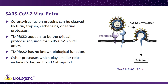Once the virus attaches to the host cell through the spike protein–ACE2 interaction, and the spike protein is cleaved via TMPRSS2 enzymatic activity, the innate surveillance mechanisms start to be activated. Some groups have suggested inhibiting the function of TMPRSS2 to minimize viral entry, since TMPRSS2 inhibitors exist today and the enzyme has not shown any indispensable function.